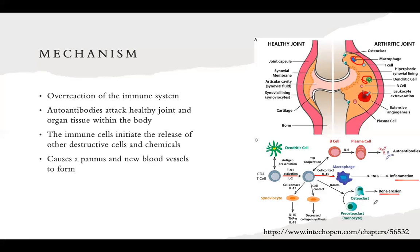Osteoclasts are recruited so heavily from this cascade that there aren't enough osteoblasts — the bone-building cells — to compensate for the bone loss, which is why there is bone erosion and destruction. This also causes a pannus, which is a thickened area of the joint, and promotes new blood vessel formation, which drives inflammation and the pain associated with rheumatoid arthritis.